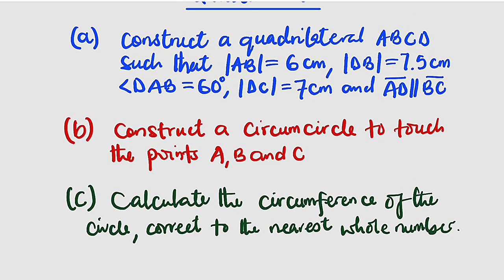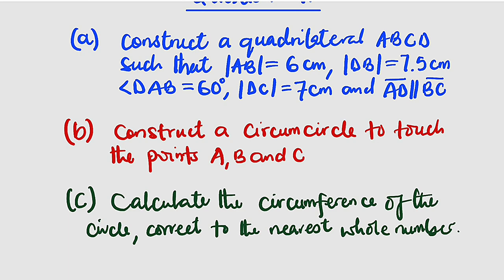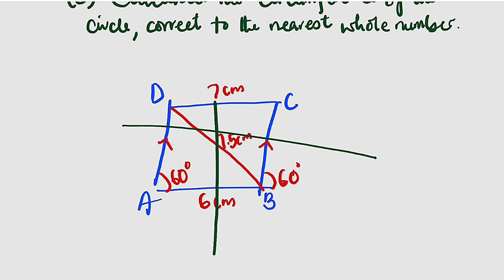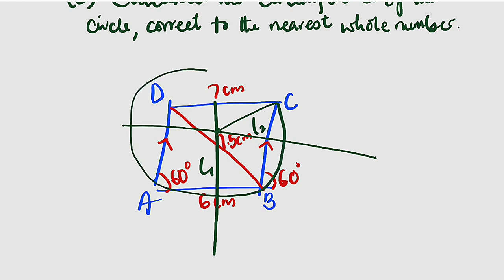We are done with part A. For part B, we are asked to construct a circle such that it touches points A, B, and C — these three vertices. To do that, you simply bisect line AB perpendicularly and do the same for BC, dividing each into two equal parts. Notice the point of intersection between the two bisector lines L1 and L2. Place the pointer of your compass on that point of intersection, extend the radius to either A, B, or C, and draw a circle. It must touch A, B, and C.